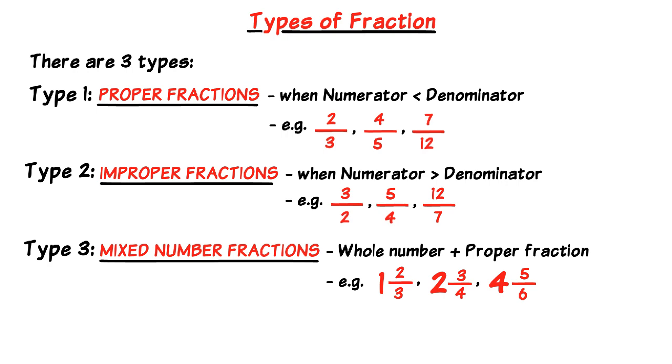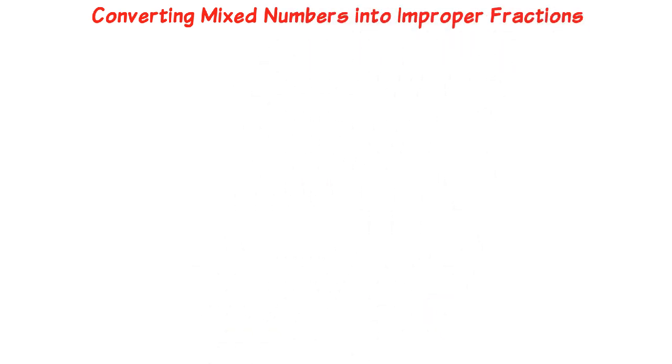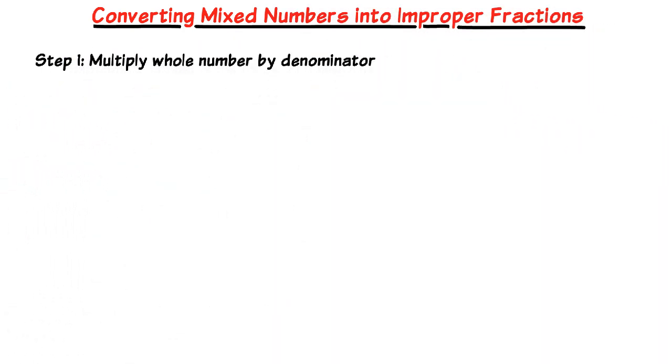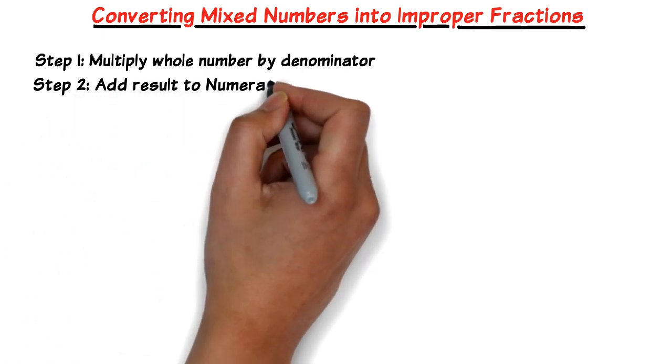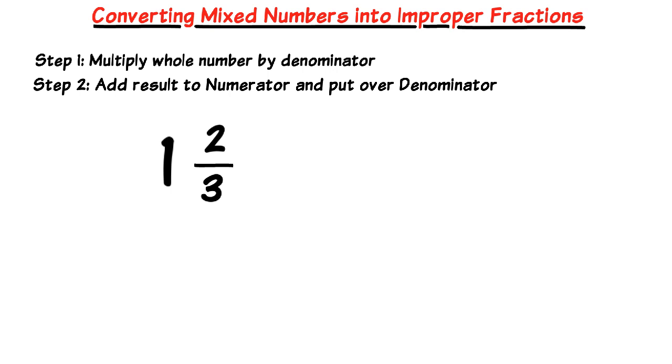But a lot of the time it's easier to just work with types 1 and 2 instead of working with type 3. So how do we convert mixed number fractions into improper fractions? The way we do that is we multiply the whole number by the denominator and we add that result to the numerator. So for example, if we take the fraction 1 and 2 thirds, we multiply the 1 by the 3, that gives us 3.